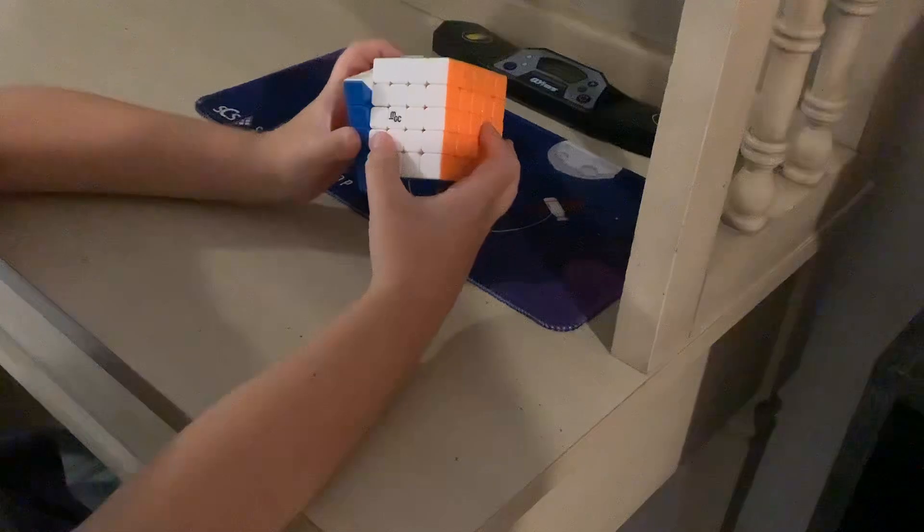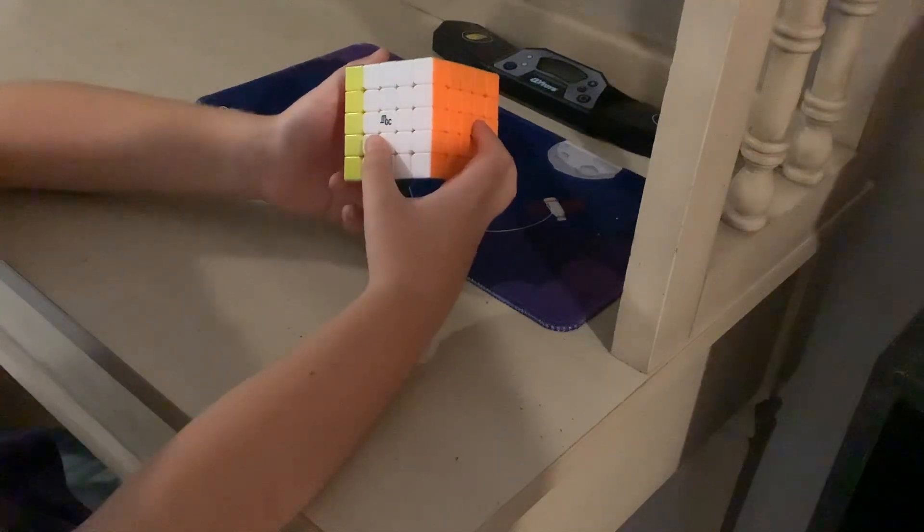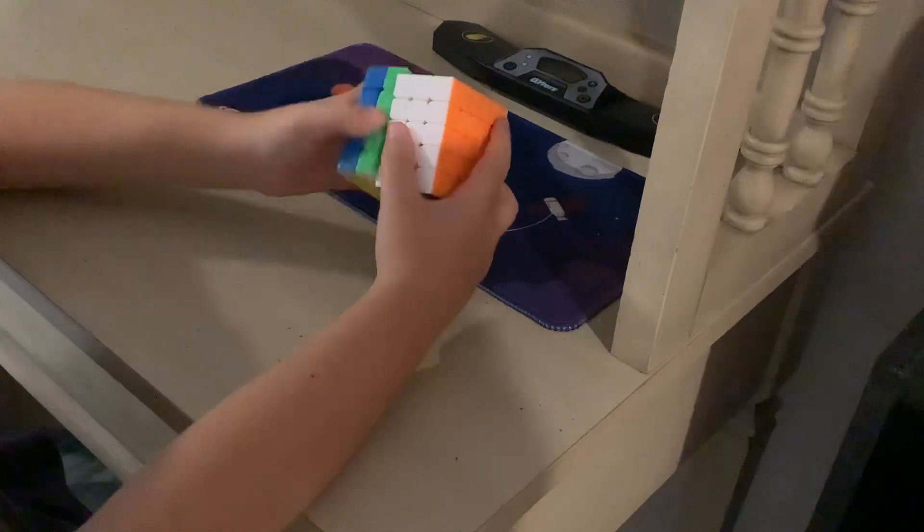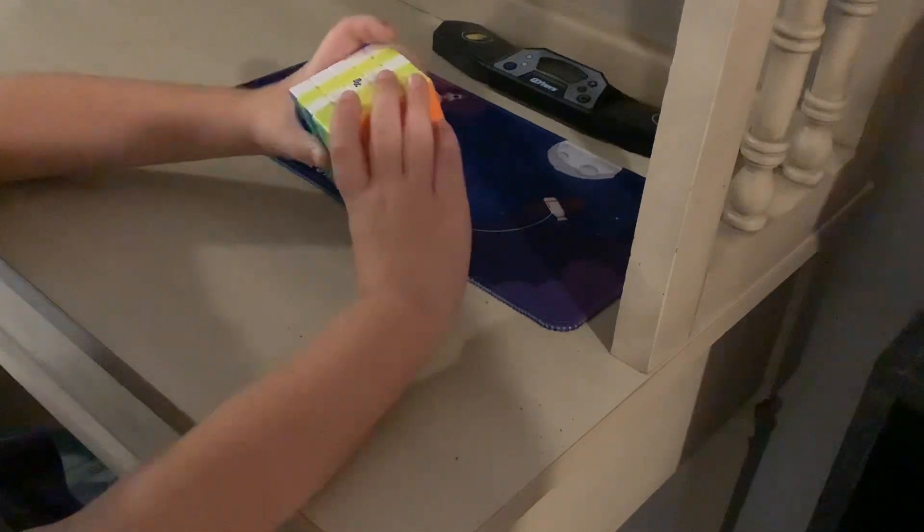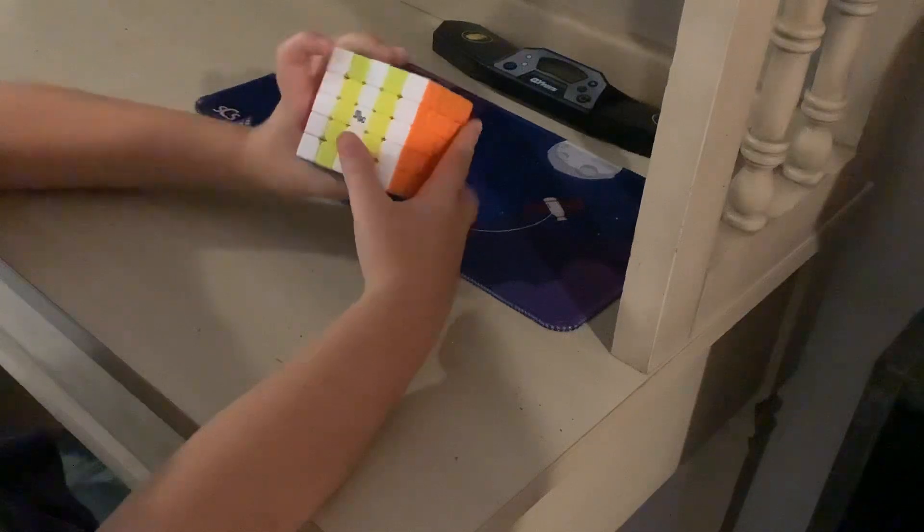So first, hold the white or yellow side up, do an outer layer turn, do an inner layer turn on that same side, and copy that on the other side. You can do it forwards or backwards.